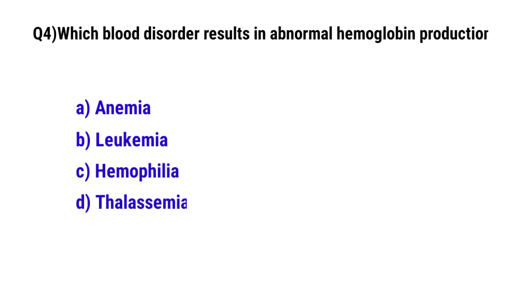Question No. 4: Which blood disorder results in abnormal hemoglobin production? The correct option is D: Thalassemia.